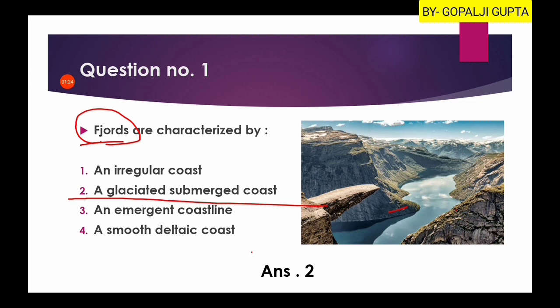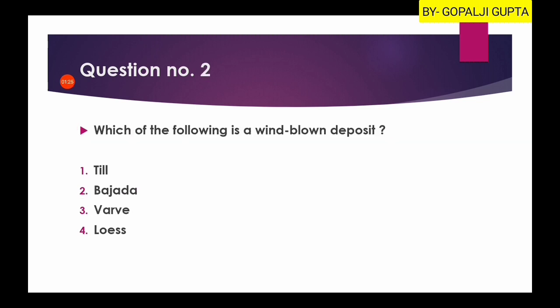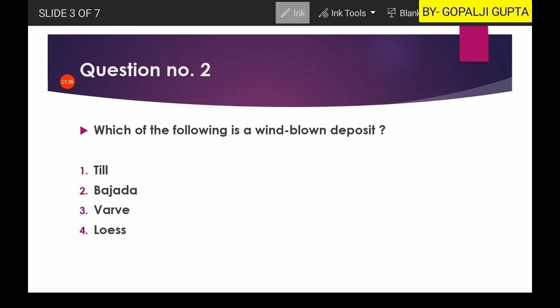Now the second question: which of the following is a wind-blown deposit? Because of wind activity, there are erosional, transportation, and depositional processes. Out of those, the wind depositional landform is loess.